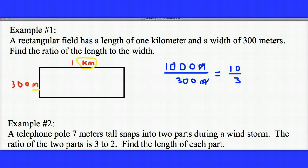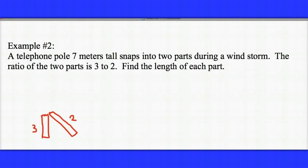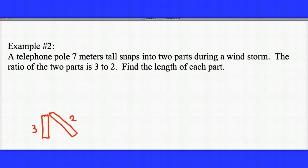Let's take a look at another example. Here we have a telephone pole that's 7 meters tall. It was snapped into two parts during a windstorm, and the ratio of the two parts is 3 to 2. Now clearly 3 plus 2 doesn't add to 7.